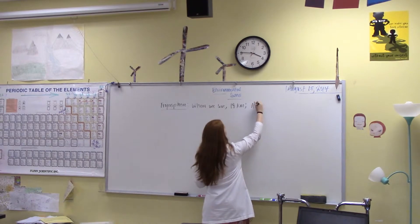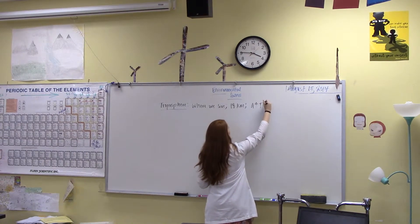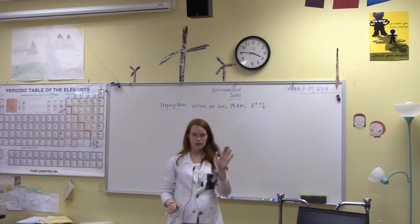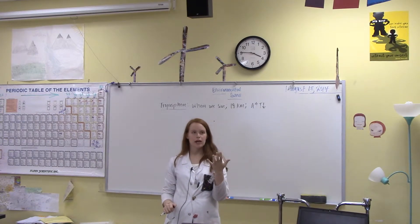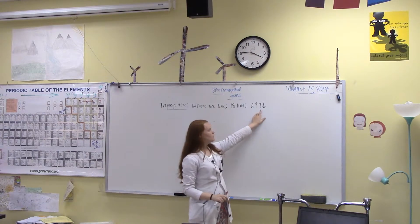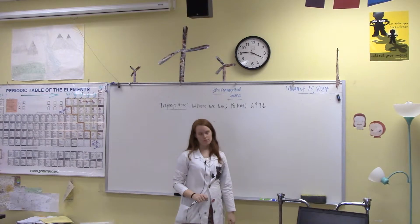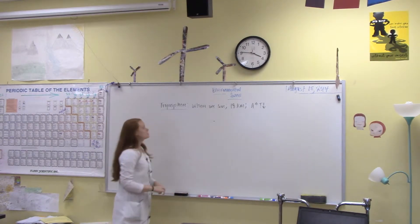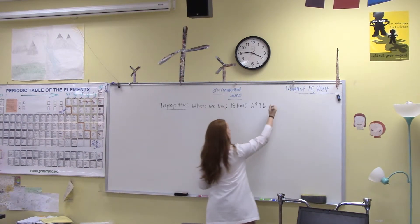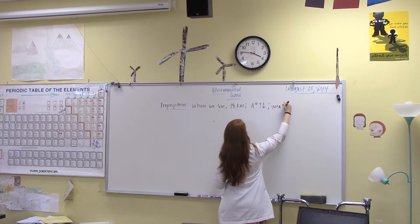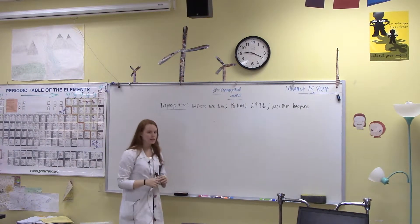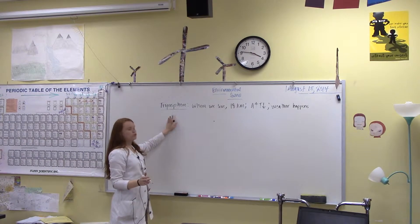As altitude increases, temperature decreases — I'm going to write 'A increases, T decreases.' You can think about mountains with snow on the top: there's snow there because it's colder on top of the mountain than lower down. The troposphere is really important — this is where we live, and this is where our weather happens. The weather that we experience doesn't happen in the other layers; it happens in the troposphere.